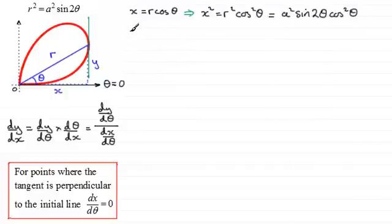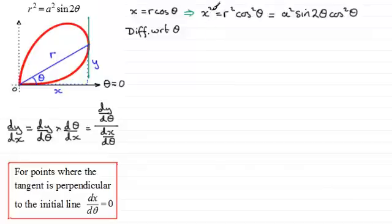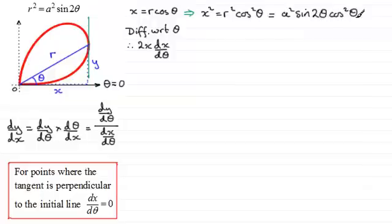I need to head towards dx/dθ and equate it to zero. I'm going to differentiate x squared equals a squared sine 2 theta cos squared theta by implicit differentiation — differentiating with respect to theta. Differentiating x squared with respect to theta: I differentiate with respect to x first to get 2x, then tag on dx/dθ at the end, as required for implicit differentiation.